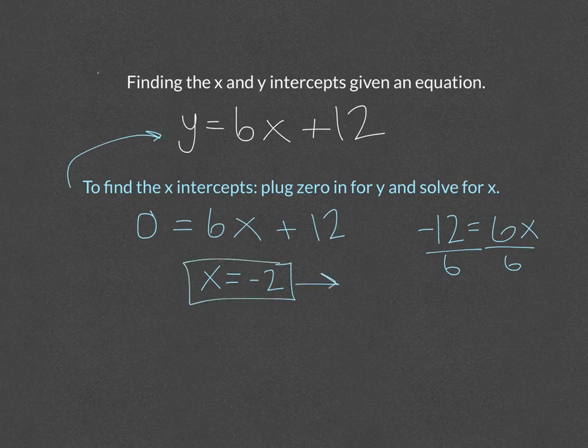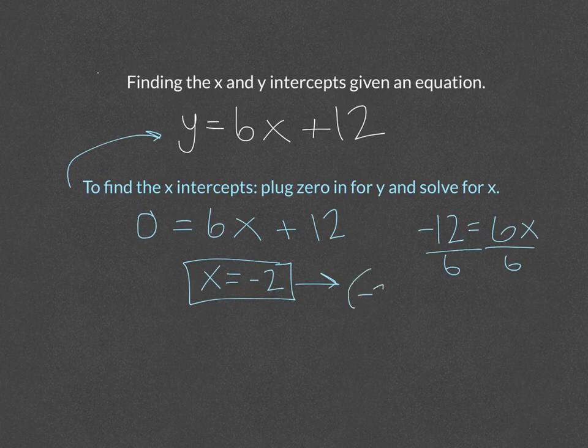As a point, the x value is negative 2. Remember the y value was zero because we plugged zero in for y.